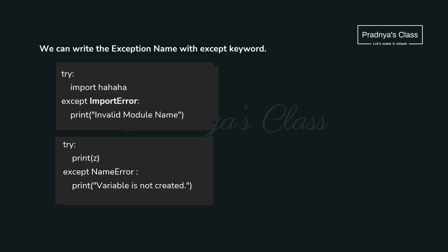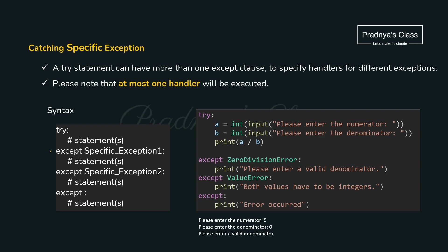There are many built-in exceptions in Python. If you want to specify the name of the exception, you can specify it with the except keyword — in that case the program will handle only that specific exception. Here is the name of the exception ImportError, and here is NameError. To catch a specific exception we can do this also. When writing an except block, there can be multiple except blocks where we mention specific names. At most one exception handler will get executed.